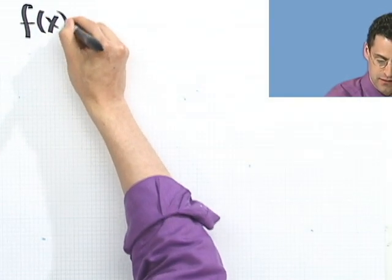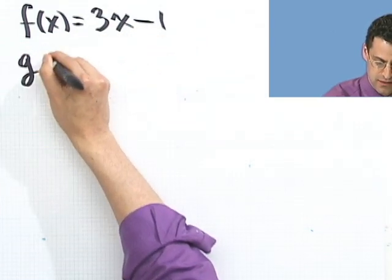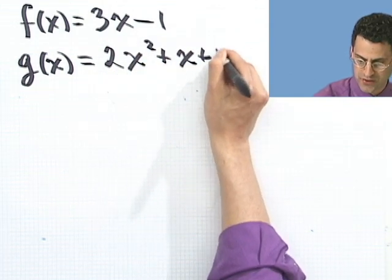So let's suppose that f of x equals 3x minus 1, just like we saw in the last discussion, and g of x equals 2x squared plus x plus 1.